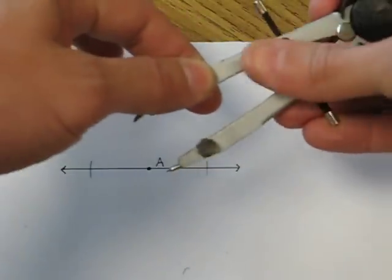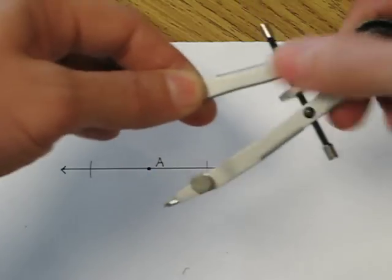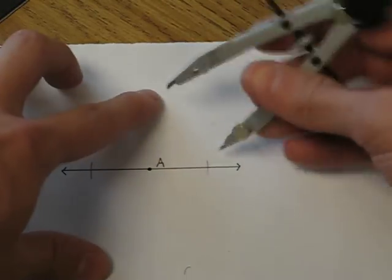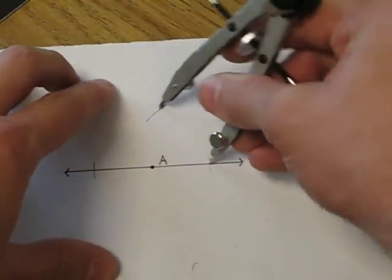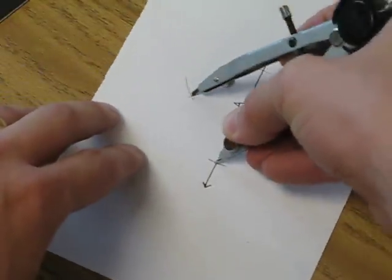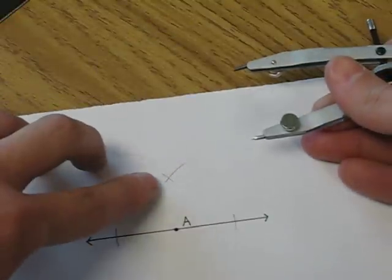The second thing we're going to do is we're going to open up our compass just a little bit and then using those markings, we're going to mark two more arcs above point A and the intent here is so that they cross each other making an X.